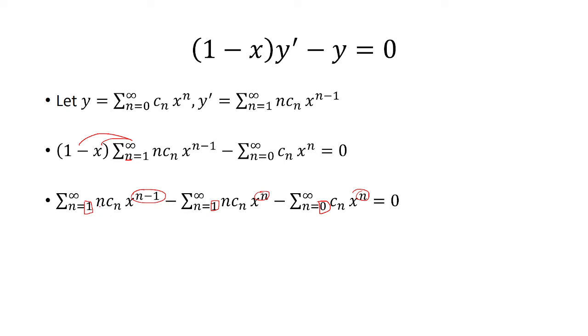Now, for the first sum, I want to make it 0. So if I decrease this index by 1, that means I have to increase all the other n's by 1. So instead of n, I would have n+1. And instead of n-1, I'm going to have n. So just add 1 to each n here.